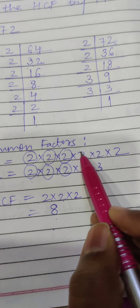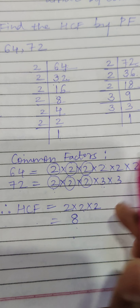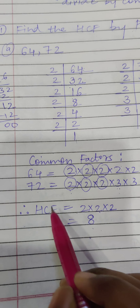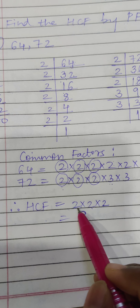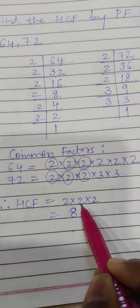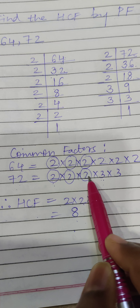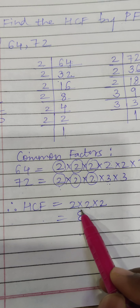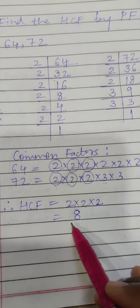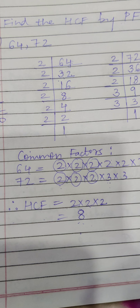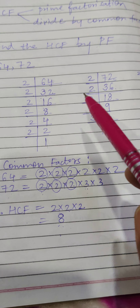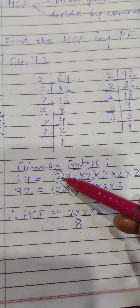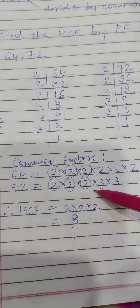So what have I got? How many times 2? — 3 times. There is no more common factor beyond that. Therefore, HCF of 64 and 72: the common factors we got are 2 × 2 × 2 — we write it once only and then multiply all the common factors. What we get: 2 to the power gives 4, and 4 times 2 gives 8. This is the way to find the HCF of given numbers by prime factorization. Remember, in HCF you multiply only the common factors.